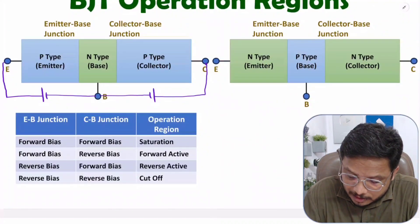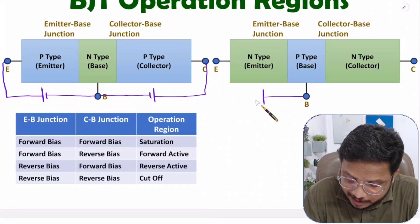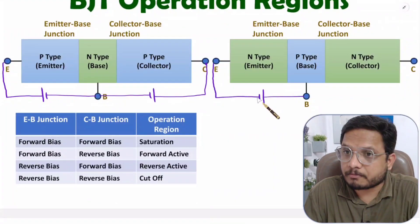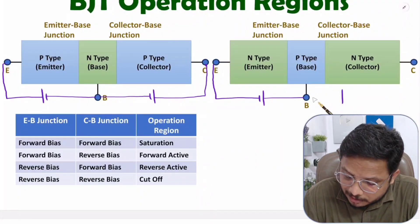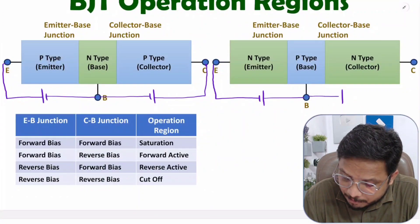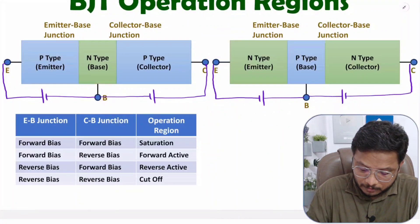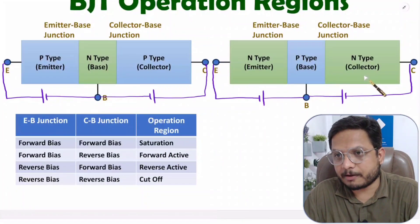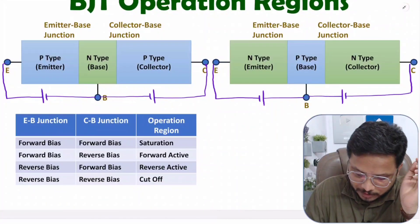Now if you want NPN in saturation region, to keep the emitter-base junction in forward bias, the battery's positive terminal should be connected with the P-type and the negative terminal with the N-type. To keep the collector-base junction in forward bias, the positive terminal is connected with the P-type base and the N-type with the negative terminal. This is how we have the saturation region of operation for both PNP and NPN.